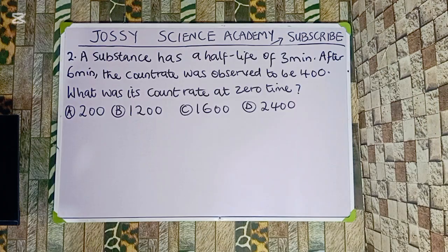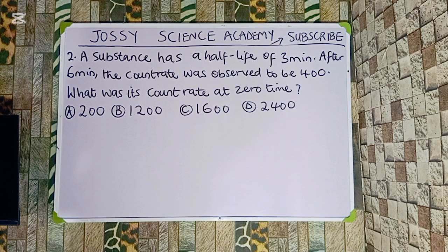A substance has a half-life of 3 minutes. After 6 minutes, the count rate was observed to be 400. What was its count rate at zero time? Option A: 200. Option B: 1,200. Option C: 1,600. Option D: 2,400.